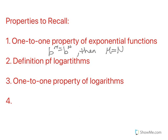I like to think that the one-to-one properties are like the common sense ones. The definition of logarithms is where we have if b to the y equals x, then y equals the log of x base b. How do we change from an exponential to a logarithm and a logarithm to an exponential? We go back and forth using the definition.